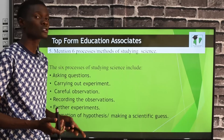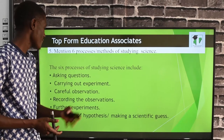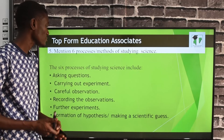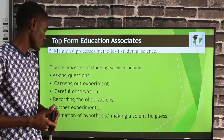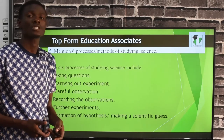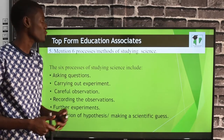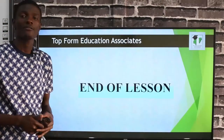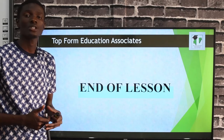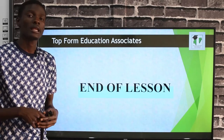Question five — six processes or methods of studying science: asking questions, carrying out experiments, careful observation, recording the observations, further experiments, and formulation of hypotheses. With that, we have come to the end of our lesson. Please go back to your notes and study hard so that we can understand the topic better. Hope to see you in our next class. Thank you.